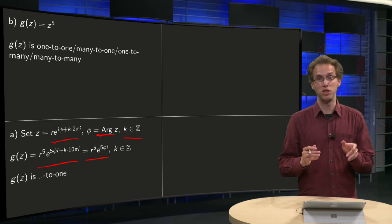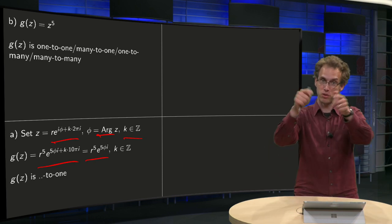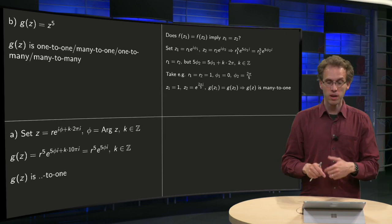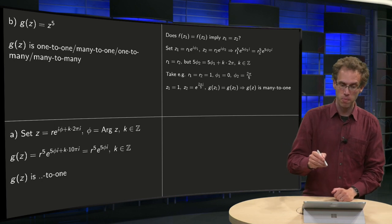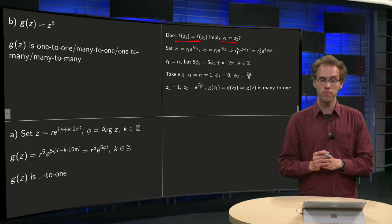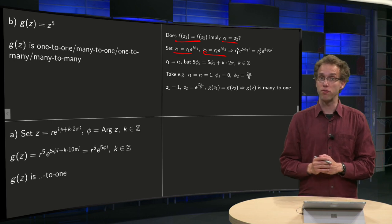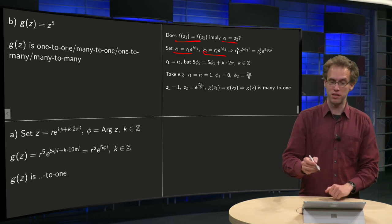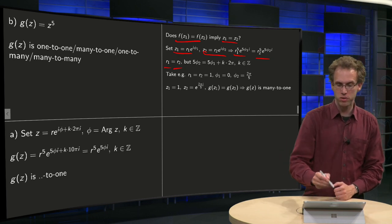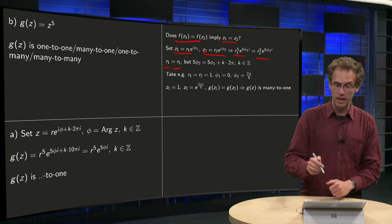Now second question, is this function one to one or many to one? So are different values mapping to the same function value or not? Well, let's try the same trick. If f of z1 equals f of z2, let's try. We again set z1 and z2 in polar form, we impose that the function values are the same, and then we know that r1 has to be equal to r2, because r1 to the power of 5 equals r2 to the power of 5. But we again have something similar.